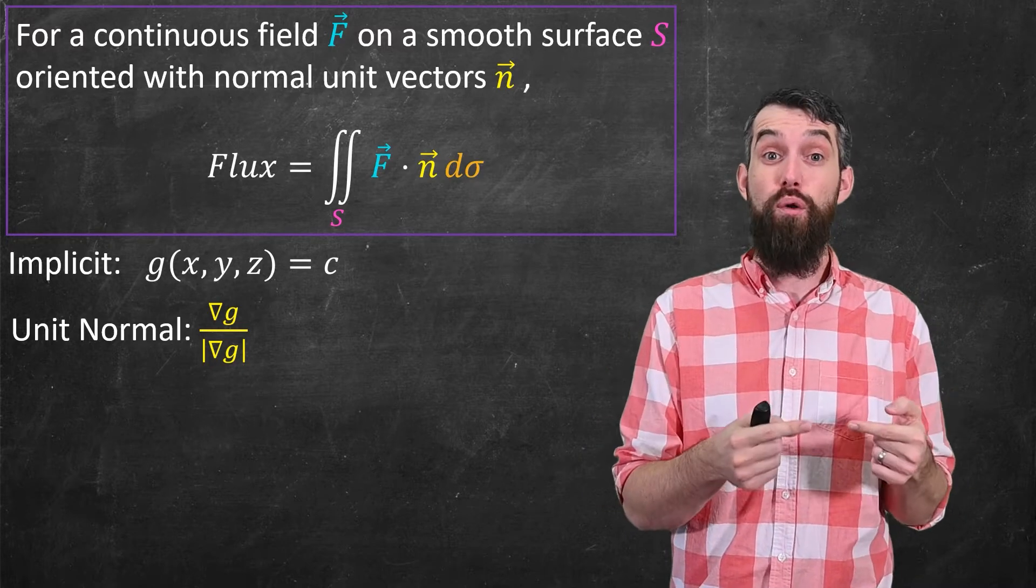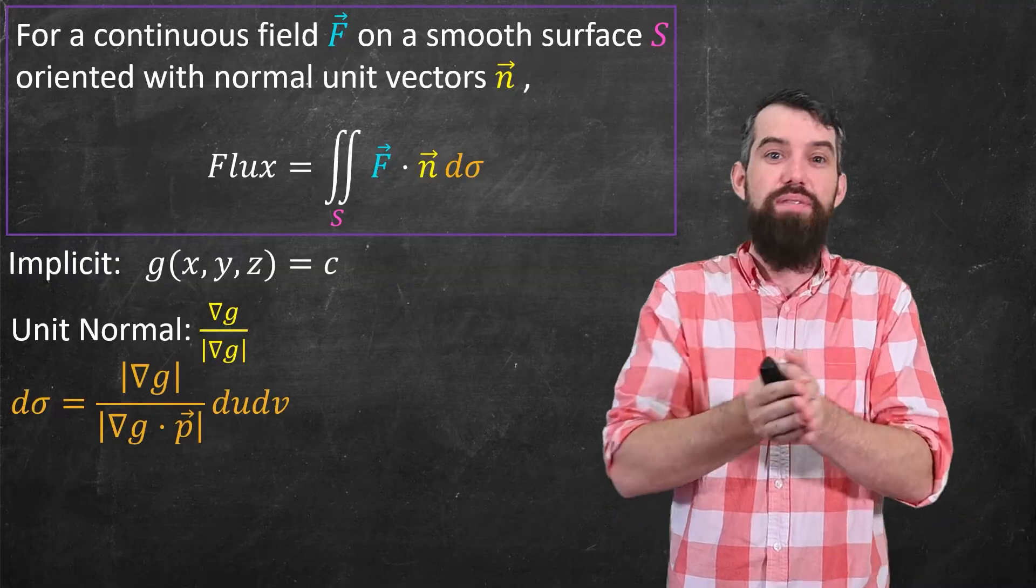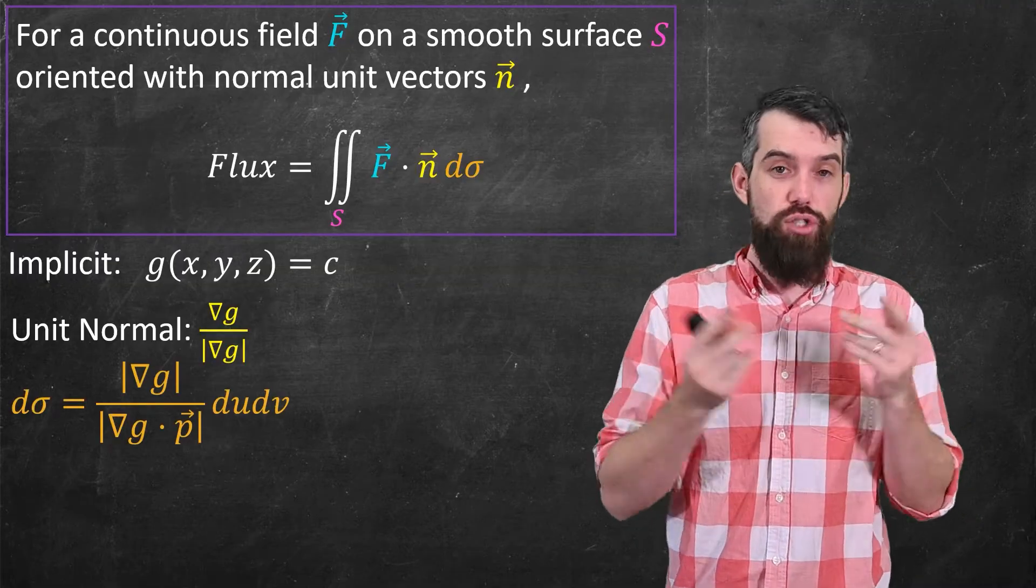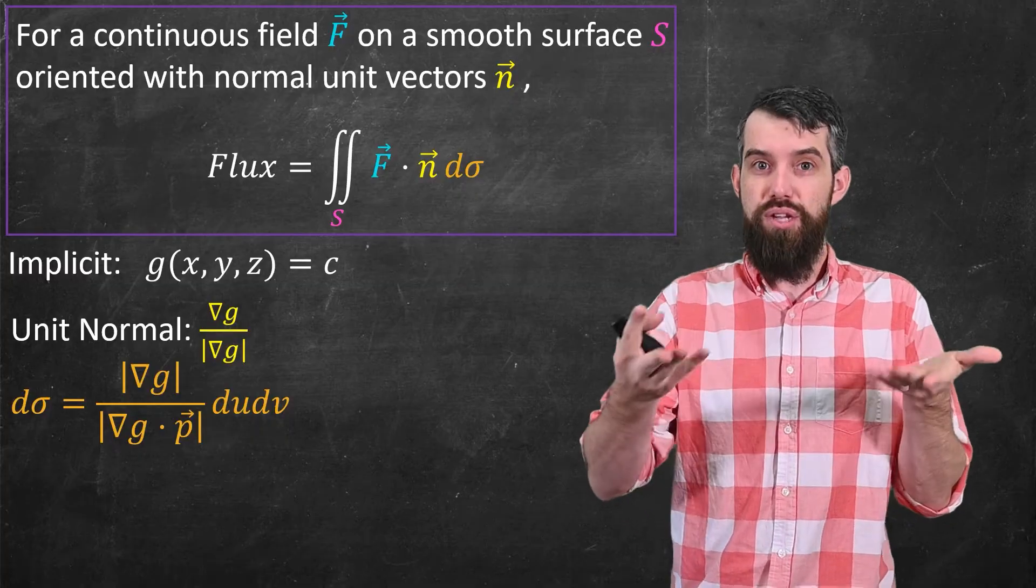D sigma we've studied before for implicit surfaces. This is the length of the gradient vector, divided by the absolute value of the gradient vector dotted with p, which was either i hat, j hat, or k hat, du dv.